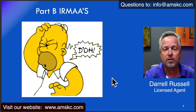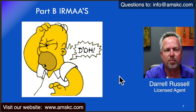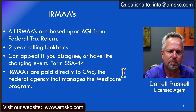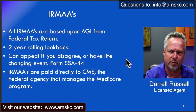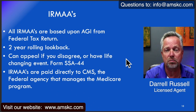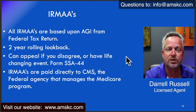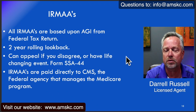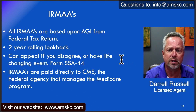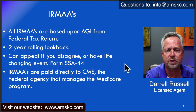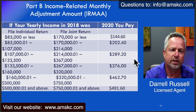Since Part B penalties hurt, let's talk about another Medicare cost that somewhat hurts money-wise, and that's Part B IRMAA. My favorite joke is: who is IRMAA and why did she get invited to my dance? Well, it doesn't apply to everyone, but IRMAA stands for Income-Related Monthly Adjustment Amount. IRMAAs are based upon how much money you made two years ago — specifically your AGI, or Adjusted Gross Income, from your federal tax return — and it's on a rolling two-year look-back. You can always appeal if you disagree or have had a life-changing event, and we've noted the form there. All IRMAAs are paid directly to CMS, the federal agency that manages the Medicare program.